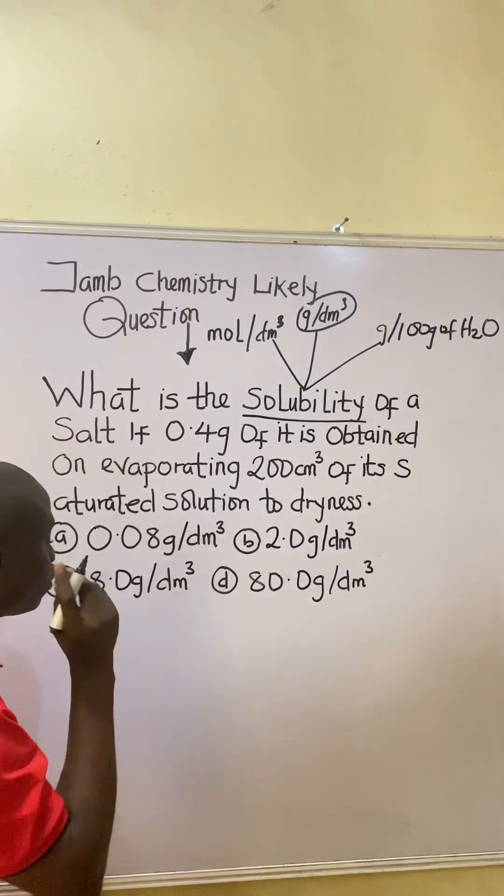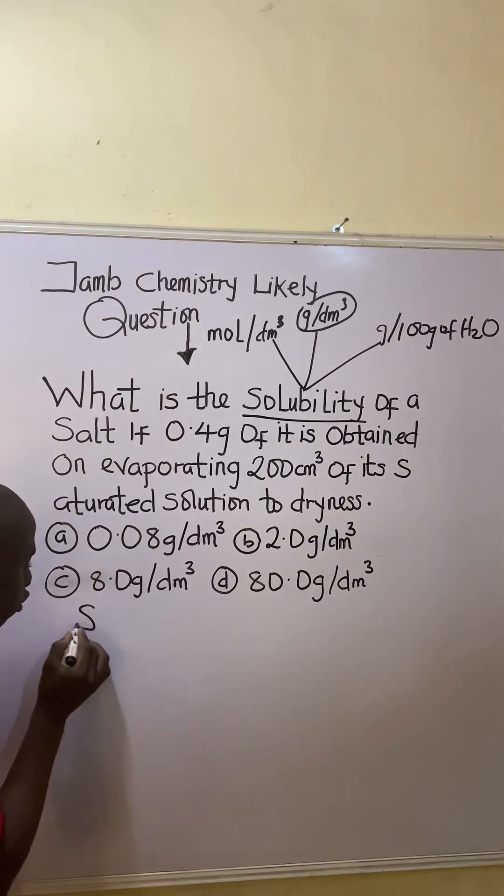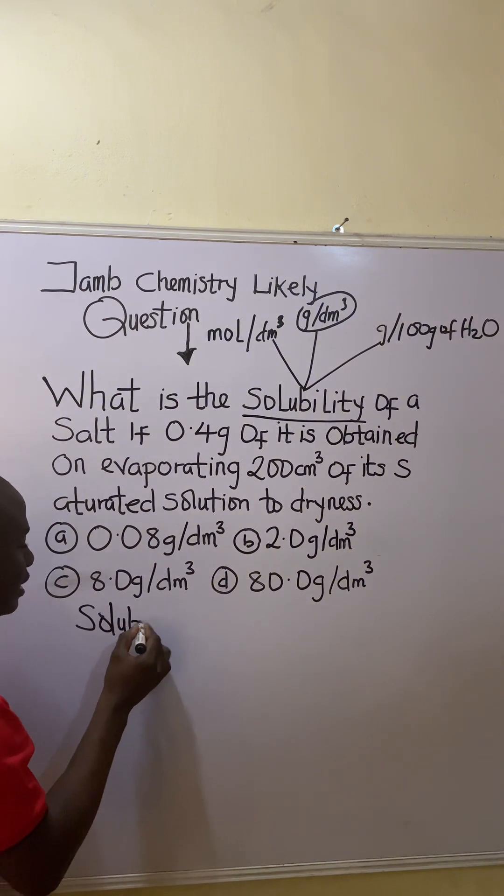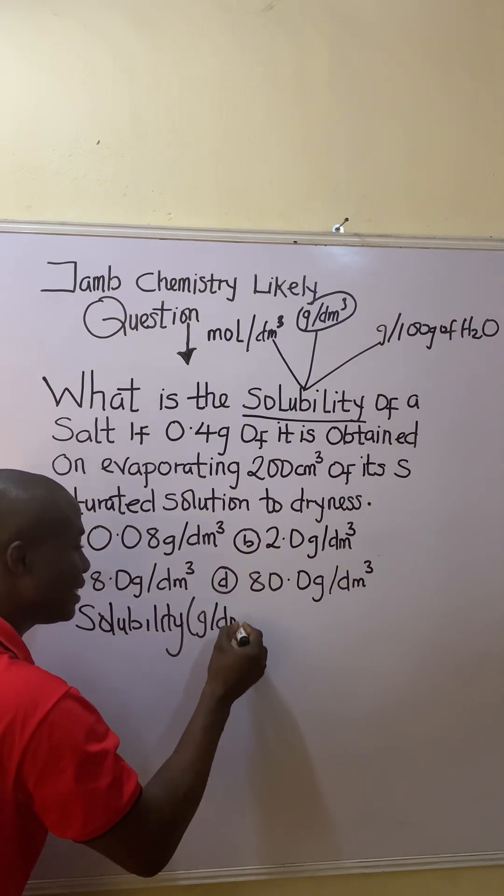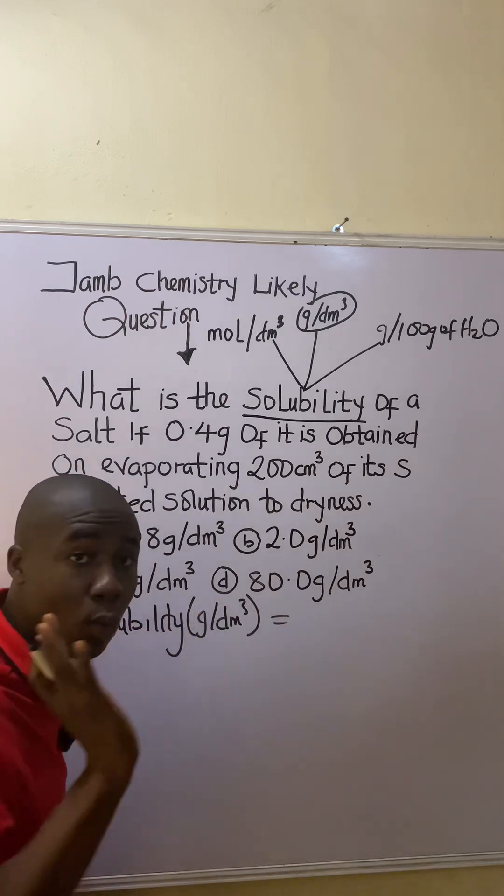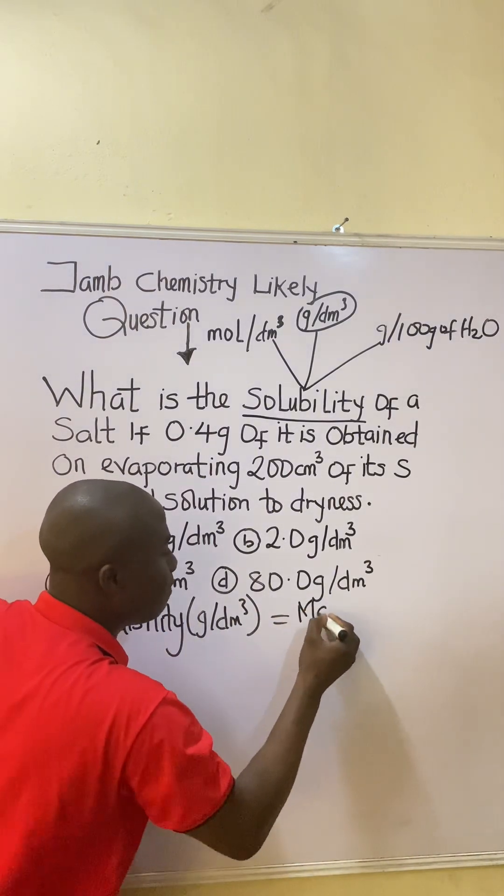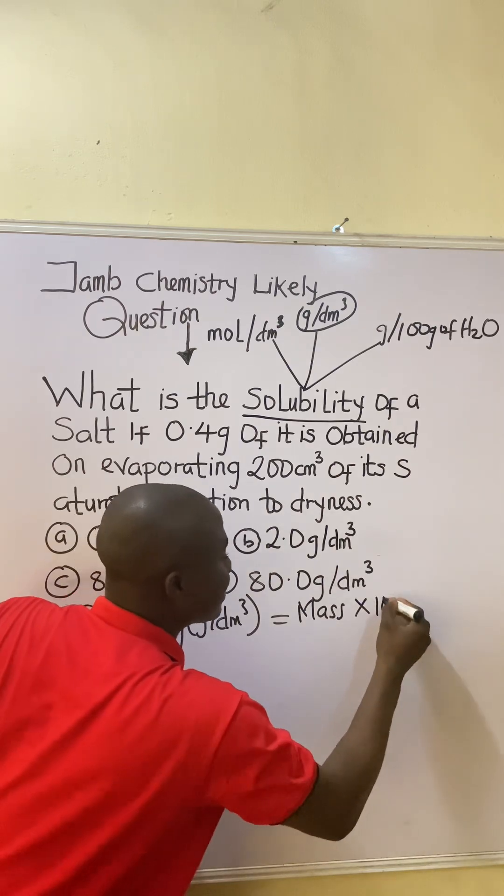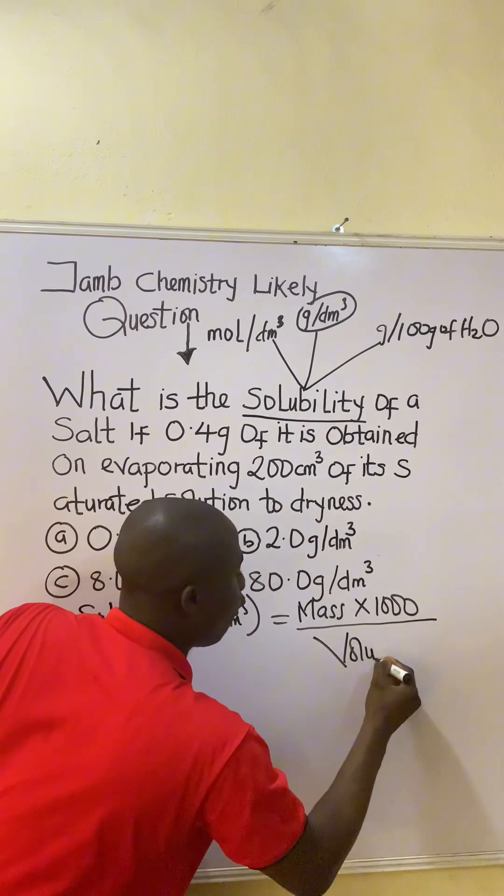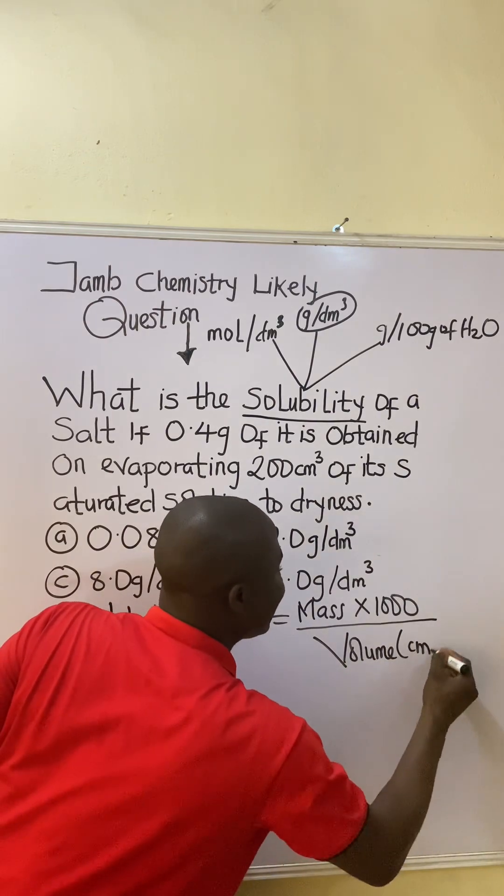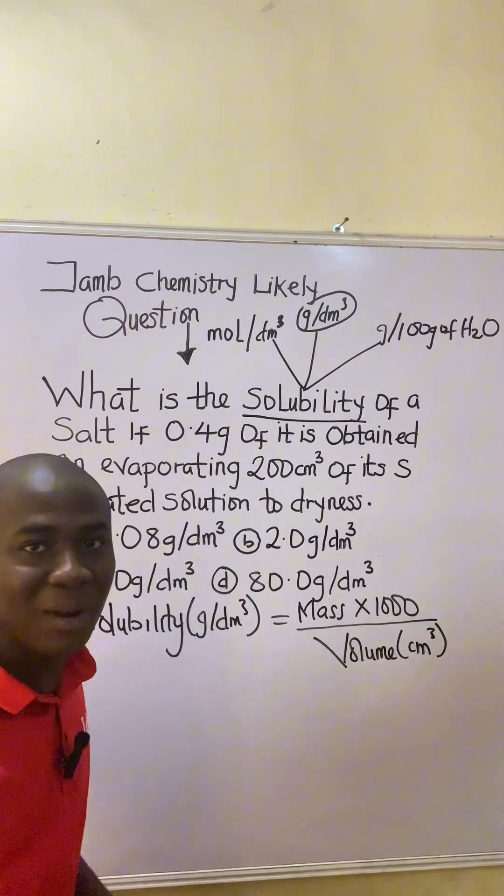So what is the formula? Follow closely now. Solubility in grams per dm³, because that's what they're asking me to solve for, is equal to mass times 1000 over volume in cm³. This is the formula I need to solve this question.